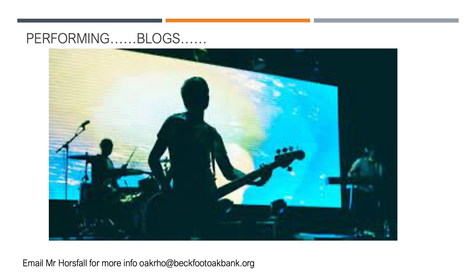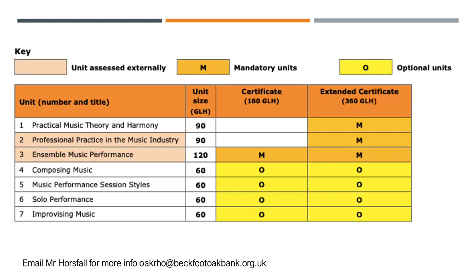There are four units that you'll be studying over your two years in the sixth form. Three of them are mandatory — that means you don't have a choice — and there is one final option. The first unit is practical music theory and harmony. The second is professional practice in the music industry. The third is ensemble music performance. And the fourth unit is a choice from composing music, music performance styles, solo performance, and improvising music.